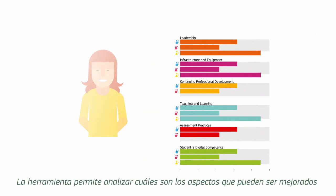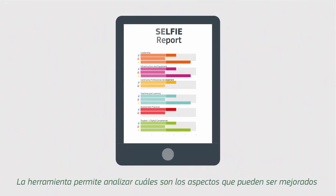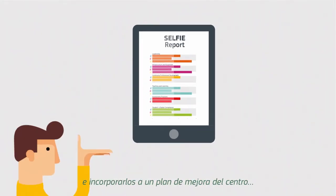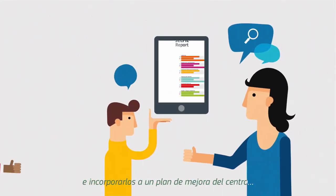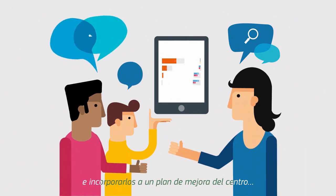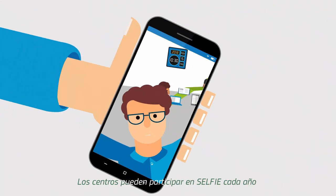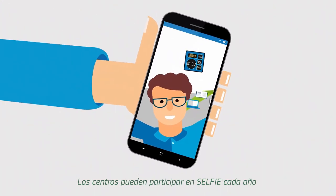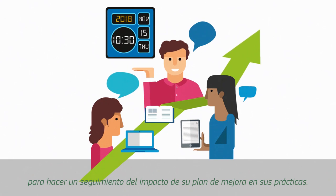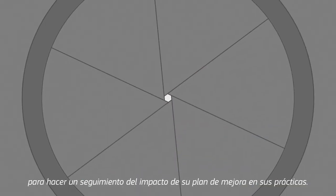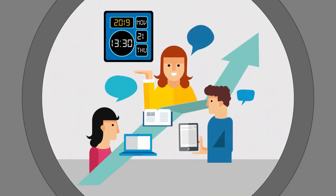Areas for improvement can be explored further and incorporated into a school improvement plan. Schools can take a Selfie every year to monitor the impact of their improvement plan on school practice.